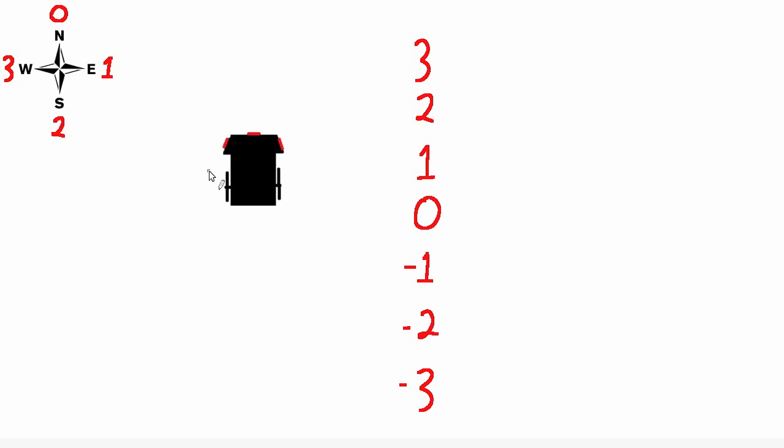We already have a function that tells us which way we would like to turn — it's the find_best_neighbor function. All we need now is one more function, one that actually turns the robot where we want it to go. Let's call it the turn_toward_best_neighbor function.